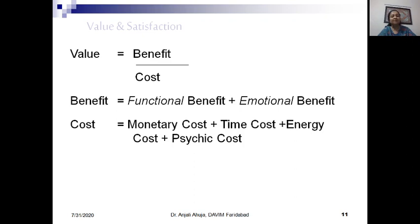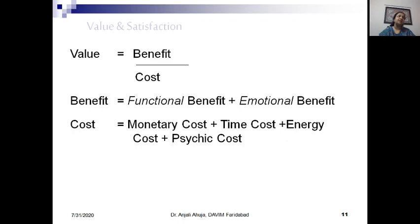Now we come to value and satisfaction. Value is defined as benefit divided by cost. The benefit we get from a product can be functional or emotional — every product has both parts. Some products have more functional benefit and less emotional benefit, or vice versa. For example, giving a bouquet or greeting card as a gift has very low functional benefit but very high emotional benefit. On the other hand, buying a pen has very high functional benefit and less emotional benefit, but it is always a combination of both.